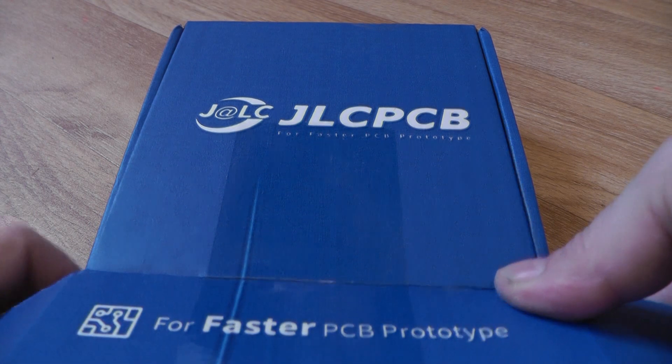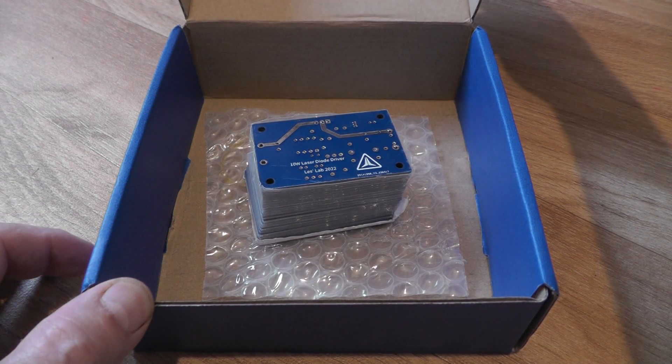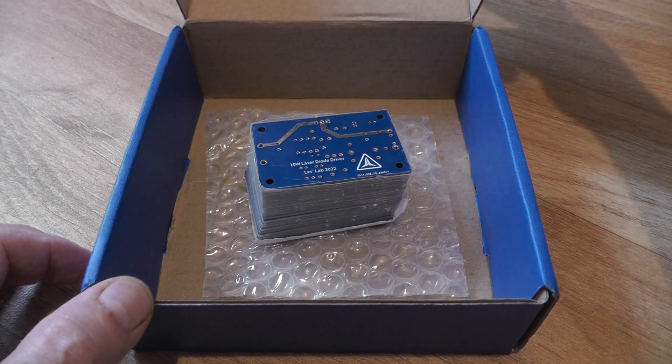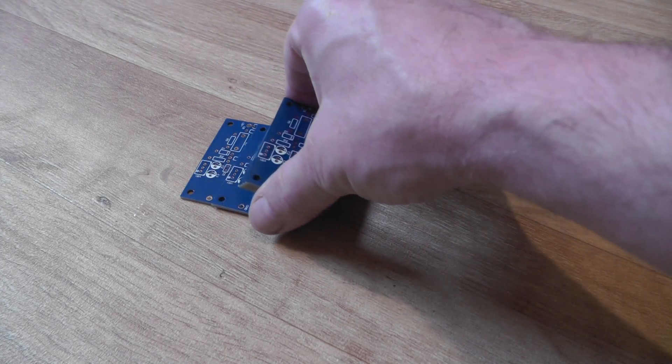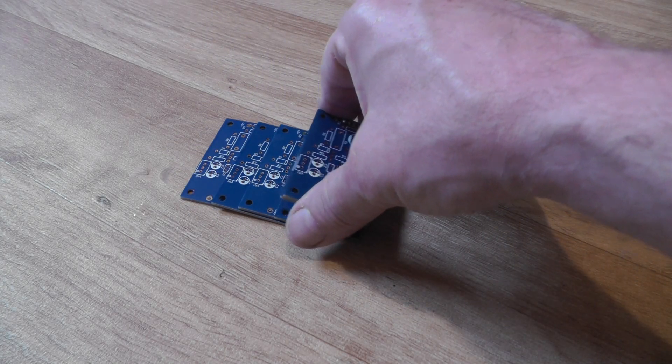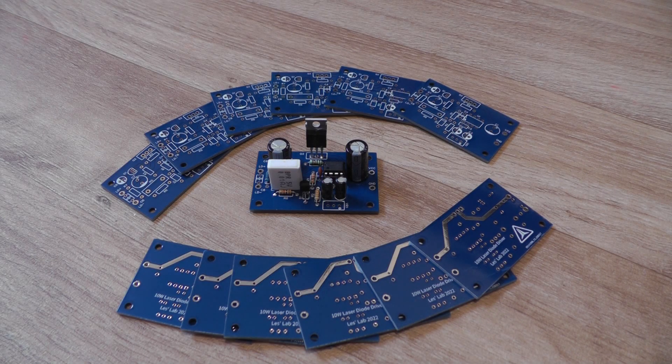This episode is sponsored by JLCPCB, the manufacturer that produced the printed circuit boards for this project. JLCPCB can manufacture high quality PCBs up to 6 layers starting at just $2 for 1 to 4 layer PCBs with fast turnaround and online real time order tracking.